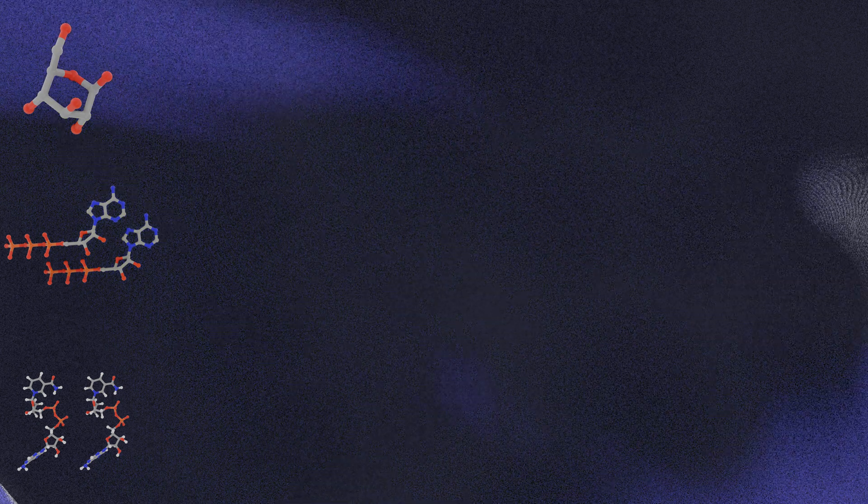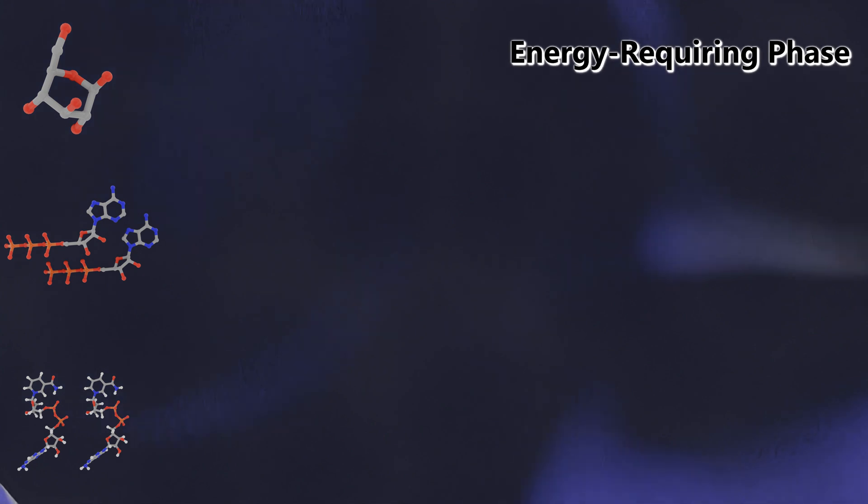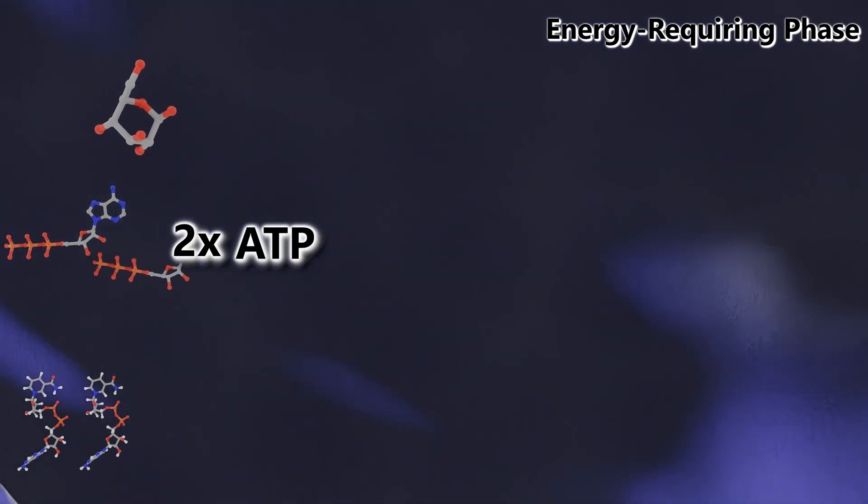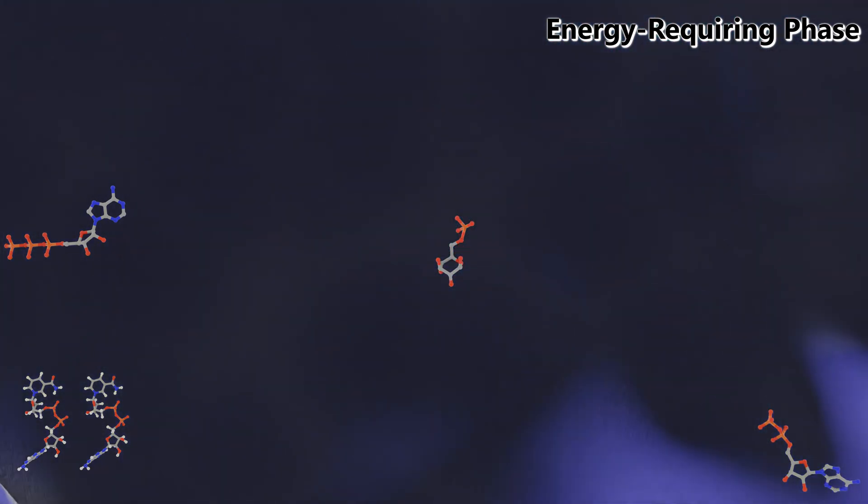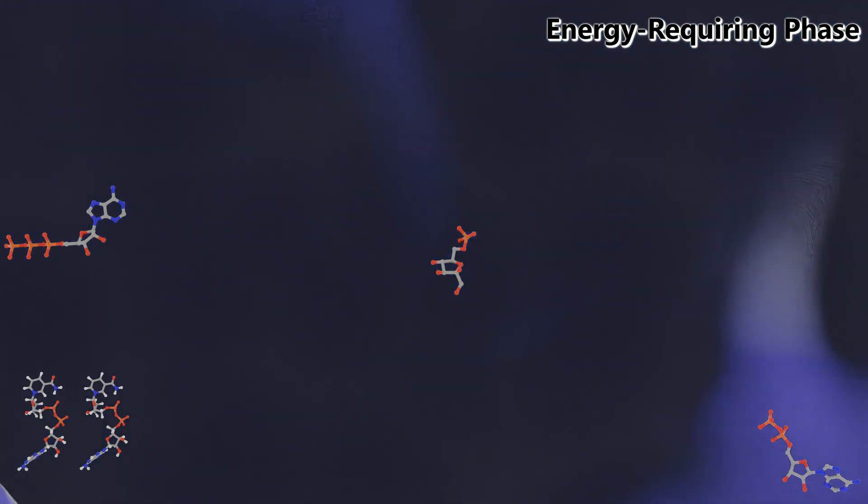The first half of the pathway is the energy requiring phase, which requires two ATP molecules to input some energy into the system. These molecules literally lose their phosphate and become ADP, which we will bring back into the system later on.